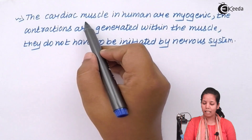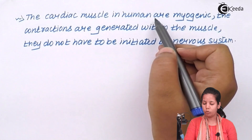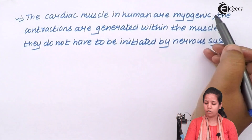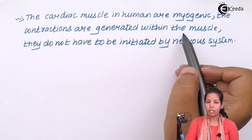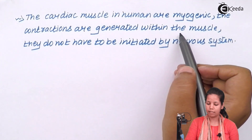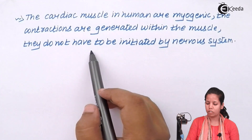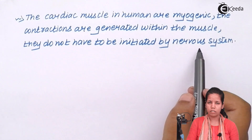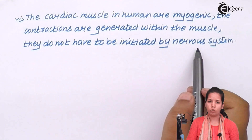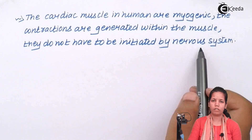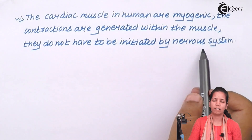The cardiac muscles in humans are myogenic — that is, the contractions are generated within the muscle cells themselves and do not have to be initiated by the nervous system or neurons. Neuronal signaling does not initiate this muscle contraction or relaxation.